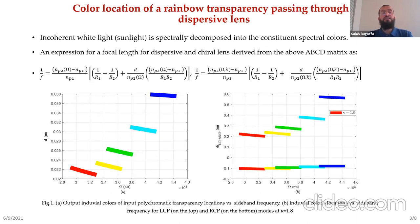This is an example of color location of the rainbow transparency passing through the dispersive color thick lens. Incoherent white light passing through the dispersive lens will be decomposed into spectral colors, and each color will have a unique focal length and therefore a unique location.